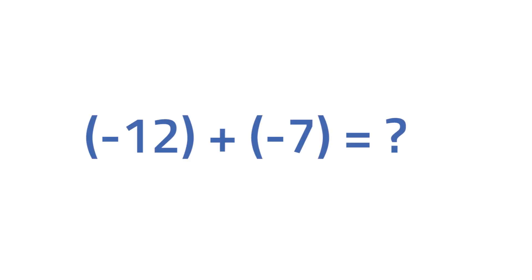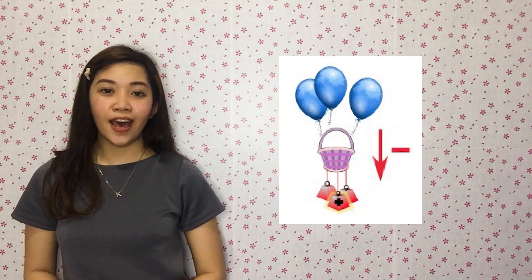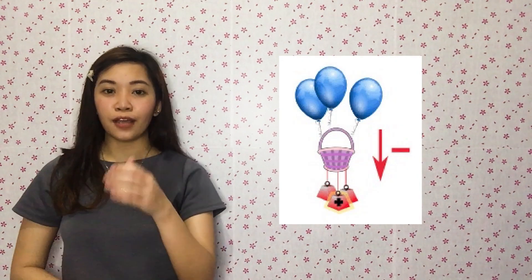Now, let's try answering these questions. What is negative 12 plus negative 7? The answer is negative 19. And how about negative 2 plus negative 2? The correct answer is negative 4. You did great!